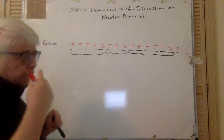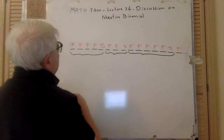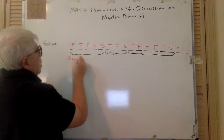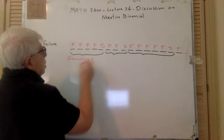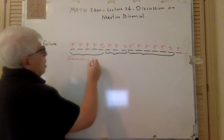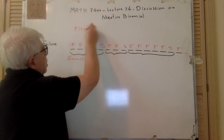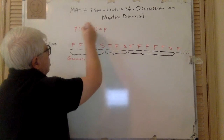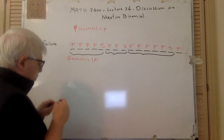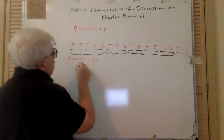If you just look at this part of the process — fail, fail, fail, fail, success — this is a geometric distribution, right? Geometric with probability P, where P of success is small p. So that is geometric P. Let's call it X1. Then this is also geometric P, call it X2. And the third one is also geometric P, and so on.